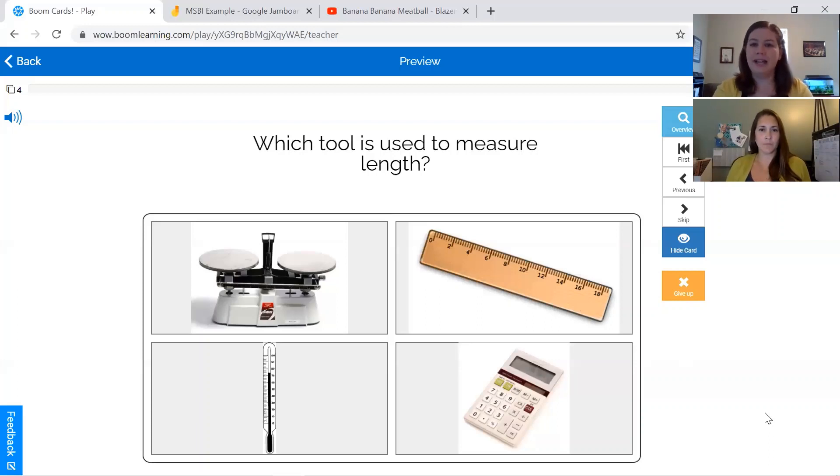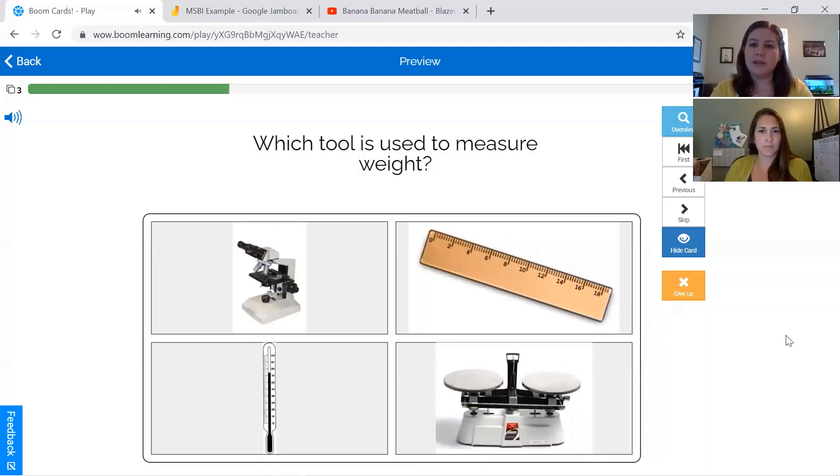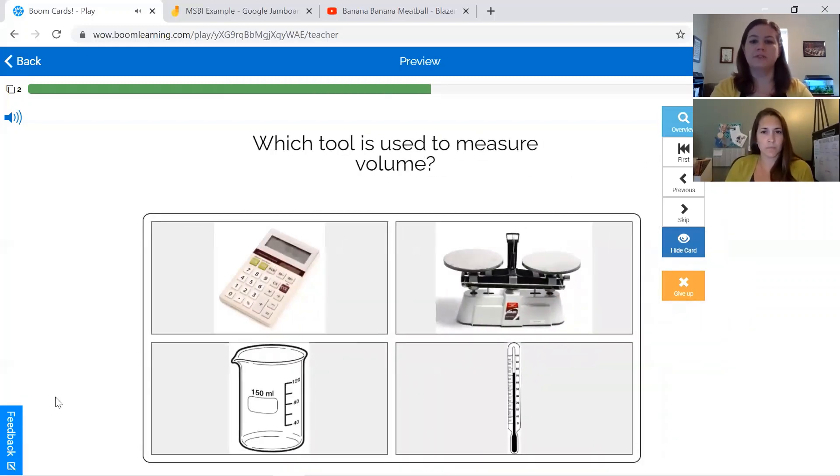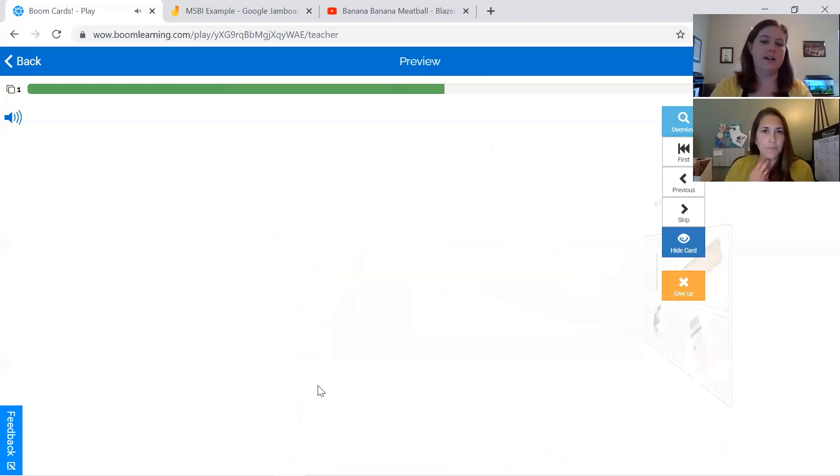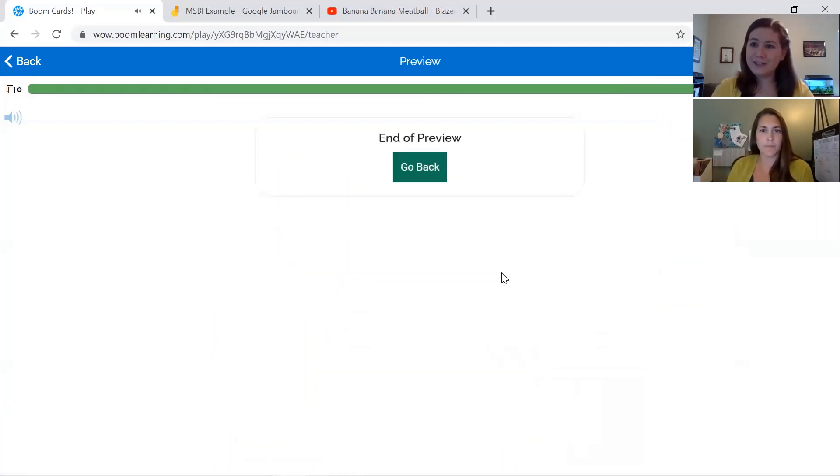Which tool is used to measure length? Ruler. Ruler. Great job, Melissa. Which tool is used to measure weight? Balance scale. Balance scale. You got it. Which tool is used to measure volume? Beaker. Beaker. Awesome. Which tool is used to measure temperature? Thermometer. Great job, Melissa.